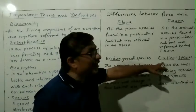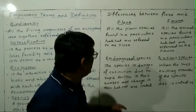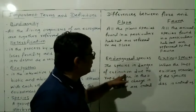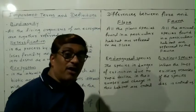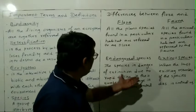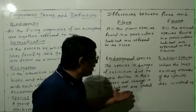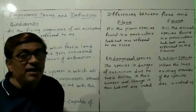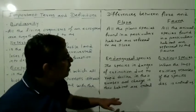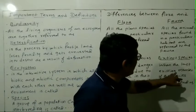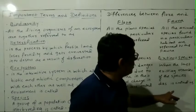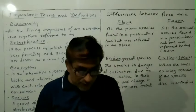Next, endangered species versus extinct species. Endangered species: the species in the danger of extinction due to the rapid decline — decline means fall or reducing — in their numbers and change in their habitat, are called endangered species. Extinct species: when the last existing member of the species dies, that is called an extinct species.